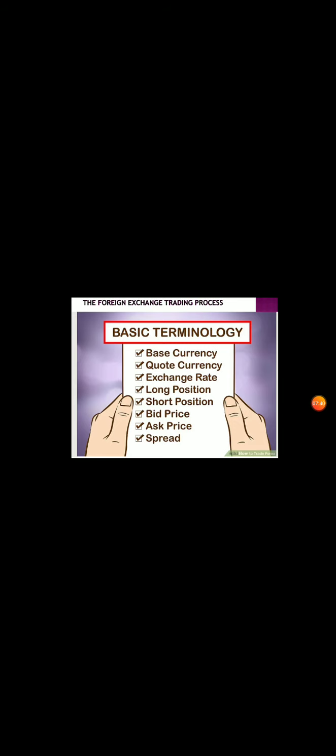In terms of the foreign exchange trade process, some basic terminology: Base currency is your national or home currency. Quote currency is the currency into which you wish to convert. Exchange rate is the rate at which one currency is converted into another. Long position refers to buying nature — if you are buying a currency expecting prices to increase in the future. Short position refers to selling foreign currency. Bid price is the rate at which the bank purchases foreign currency from the customer. Ask price is the rate at which the bank sells foreign currency to the customer. Spread is the difference between the ask price and the bid price, generally expressed as a percentage.